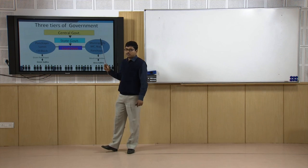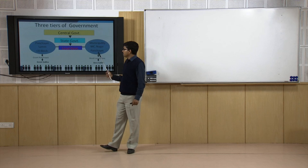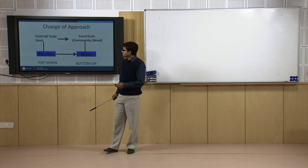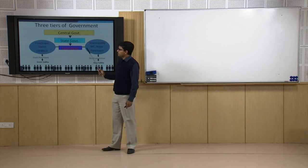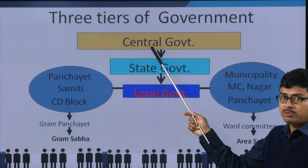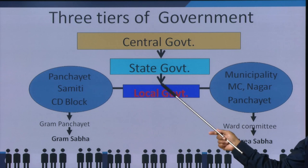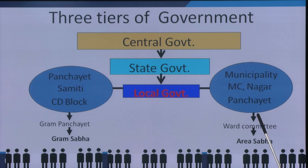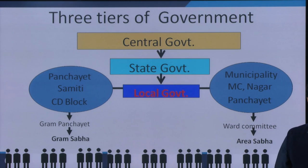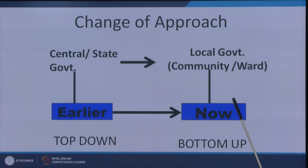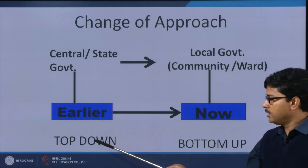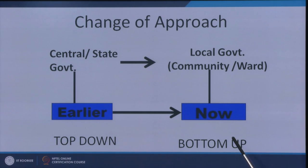Our overall discussion on housing planning will be based on the local government level and will be focused on urban areas. One of the major changes in recent years is that earlier programs were designed at the central level and came down to the local level, but right now we plan from the area sabha or gram sabha and the plan is consolidated at the central level. The major change in the planning approach is from a top-down approach to a bottom-up approach.